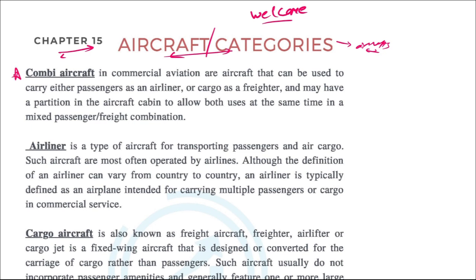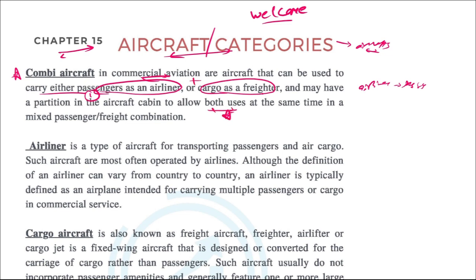In commercial aviation, combi aircraft are aircraft that can be used to carry either passengers as an airliner or cargo as a freighter. Anything which carries passengers is an airliner, and cargo aircraft is a freighter. Sometimes they can be used as both, so if both passengers and cargo are traveling, it is referred to as a combi aircraft.